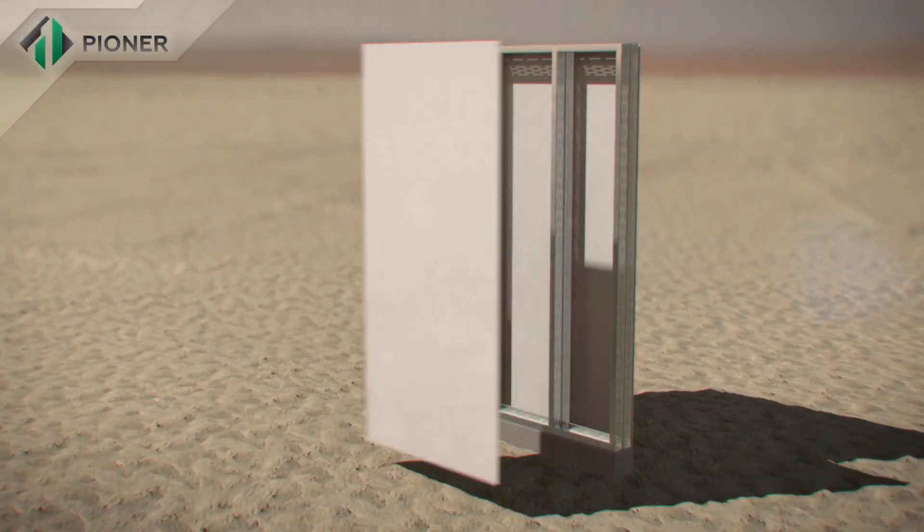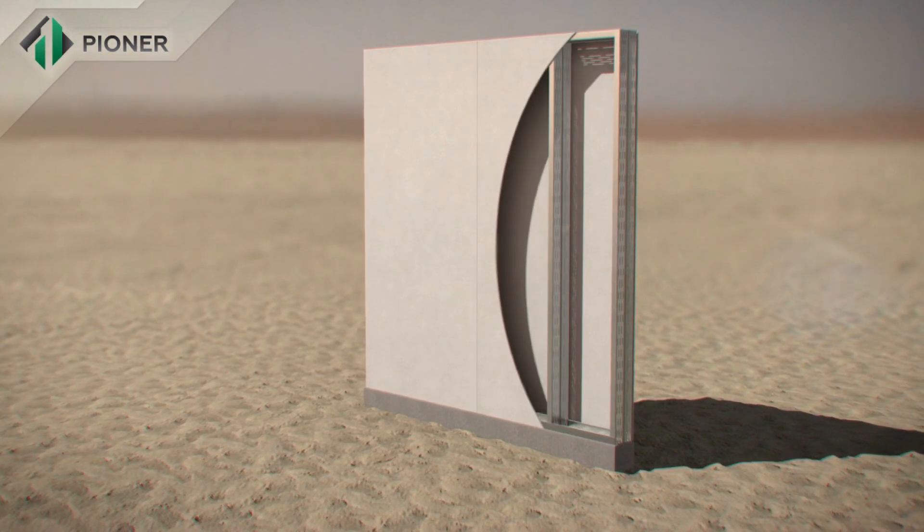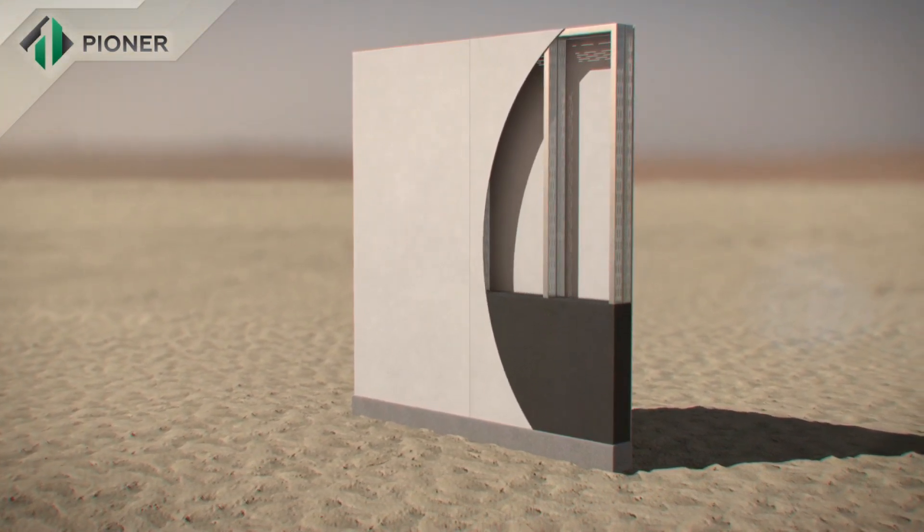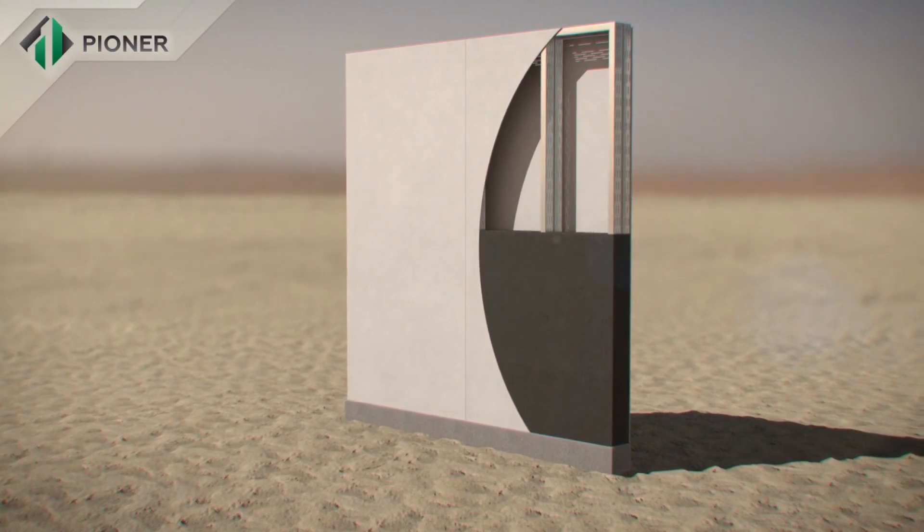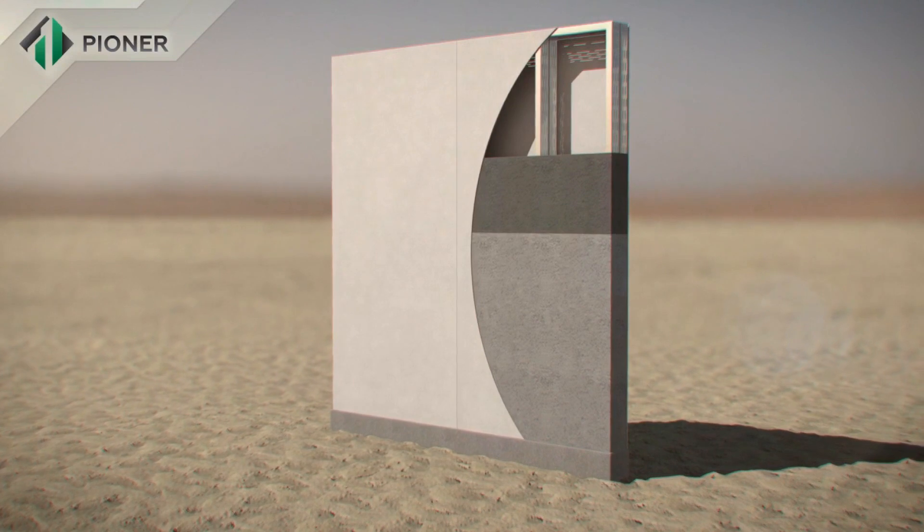A metal frame composed of bent galvanized profile which is mounted on a prepared foundation is the basis of Pioneer construction technology. Heavy combined fiber cement panel serves as permanent cast framework inside and outside of the wall.